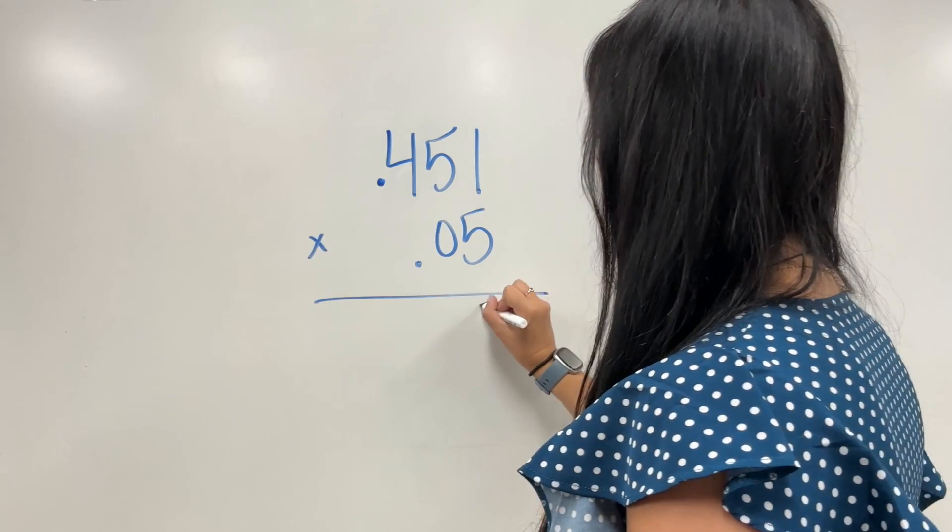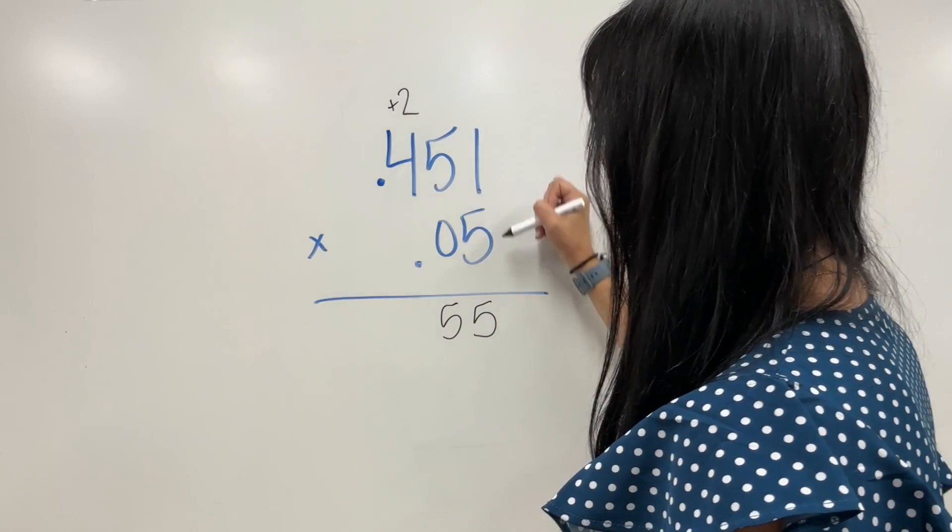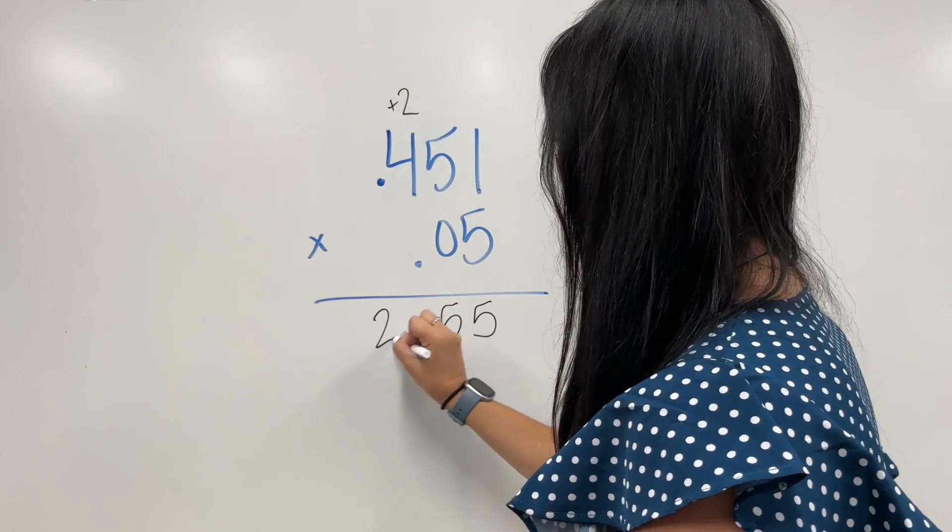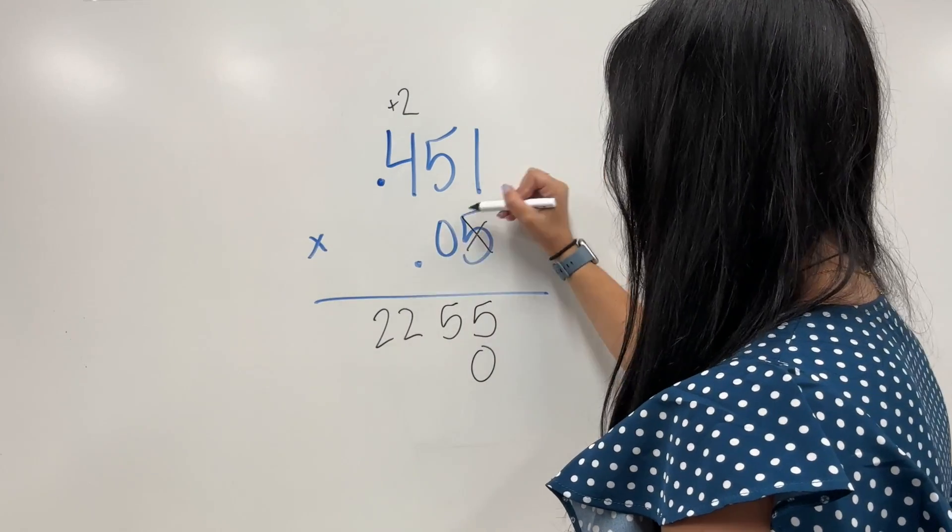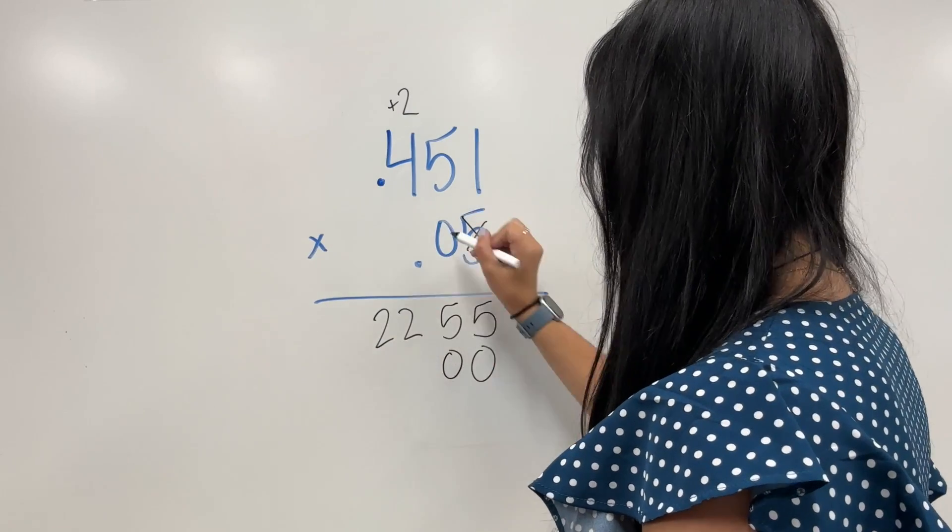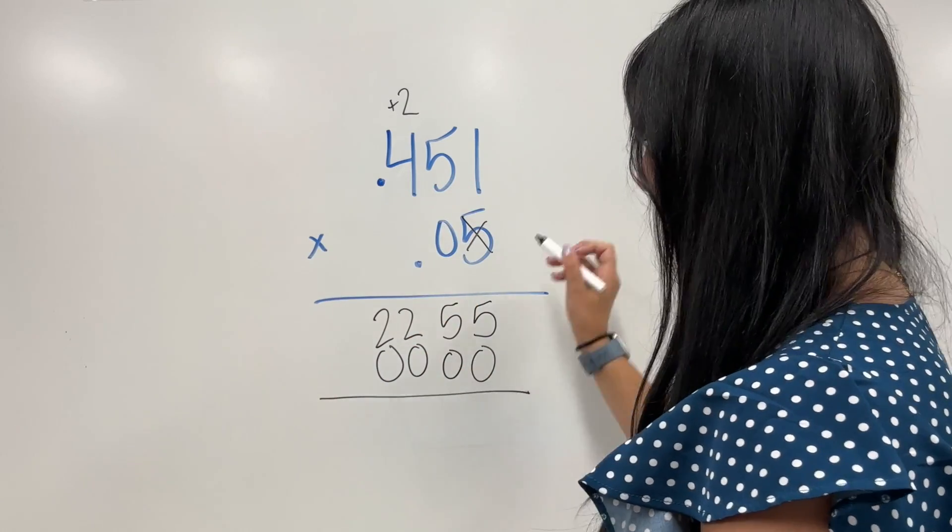5 times 1 is 5. 5 times 5 is 25, carry the 2. 5 times 4 is 20, plus 2 is 22. Cross it, drop it, add a zero. 0 times 1 is 0. 0 times 5 is 0. 0 times 4 is 0. Add like normal, giving us 2255.